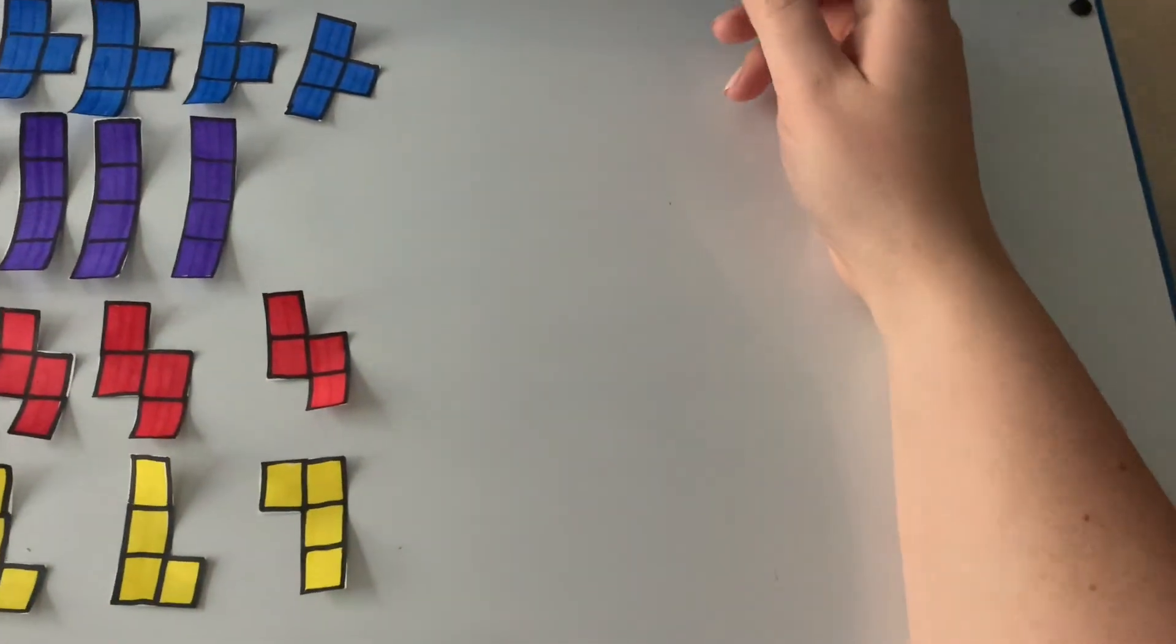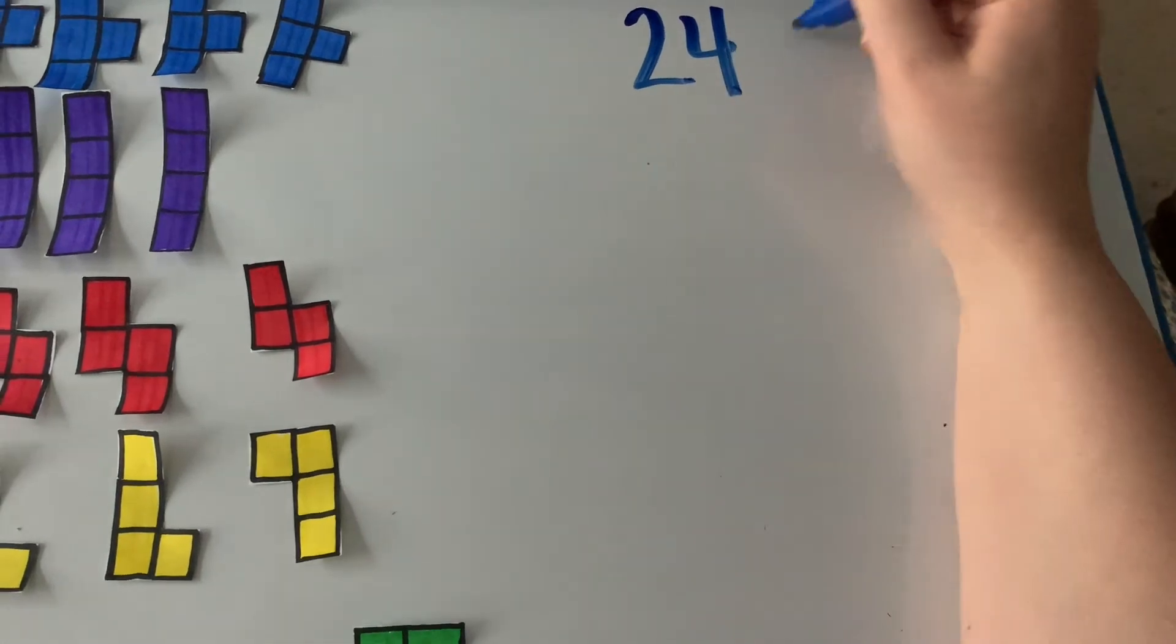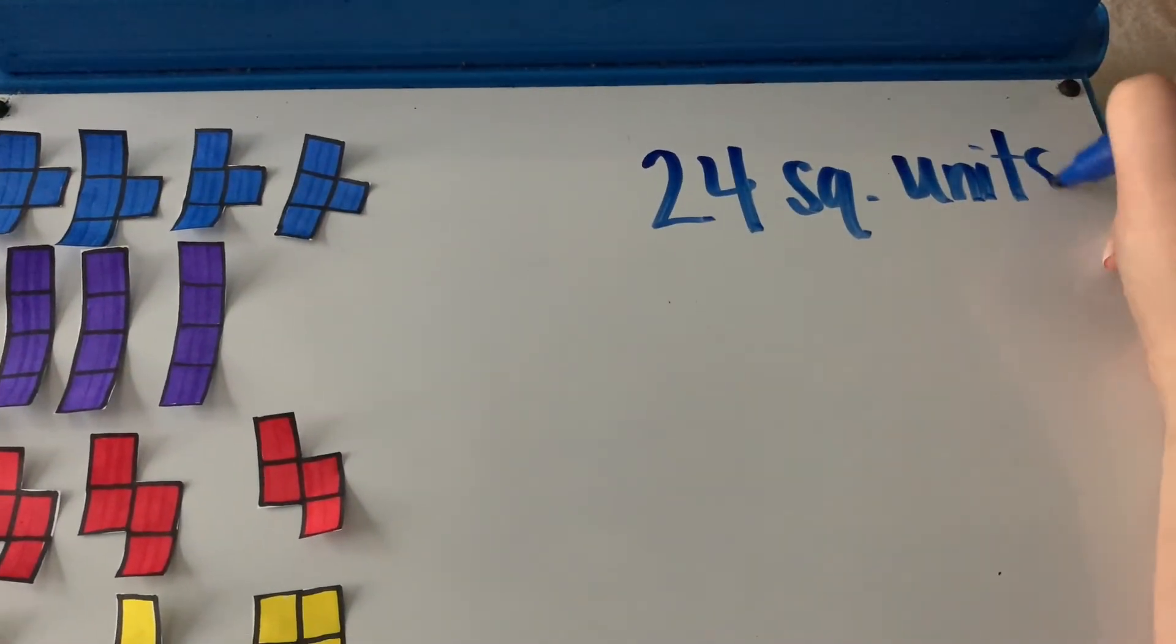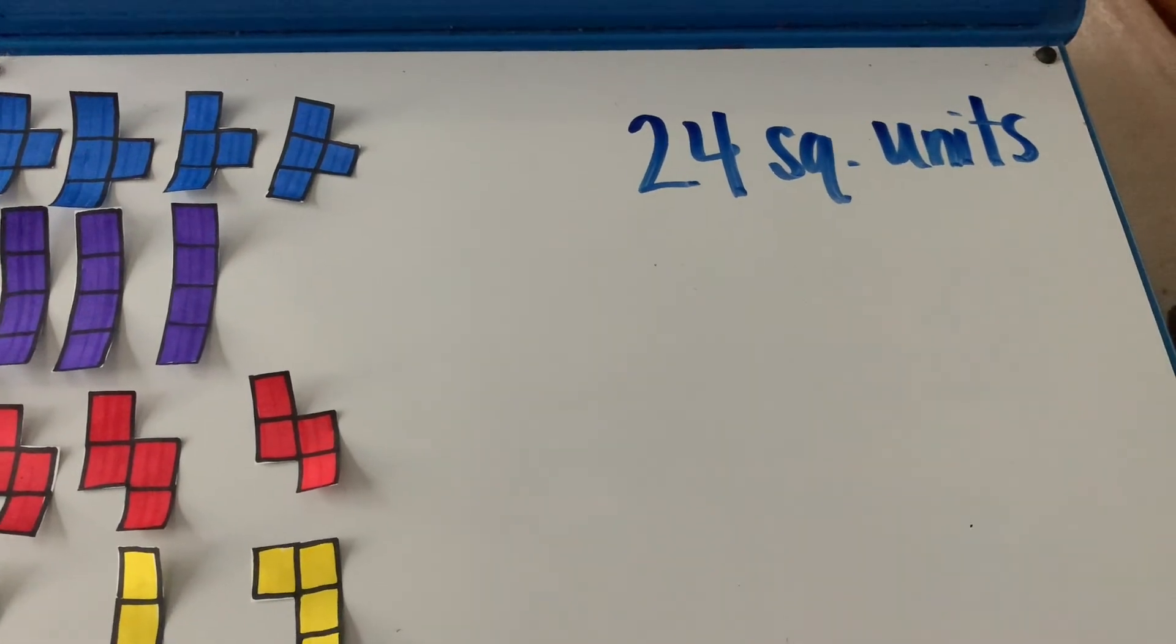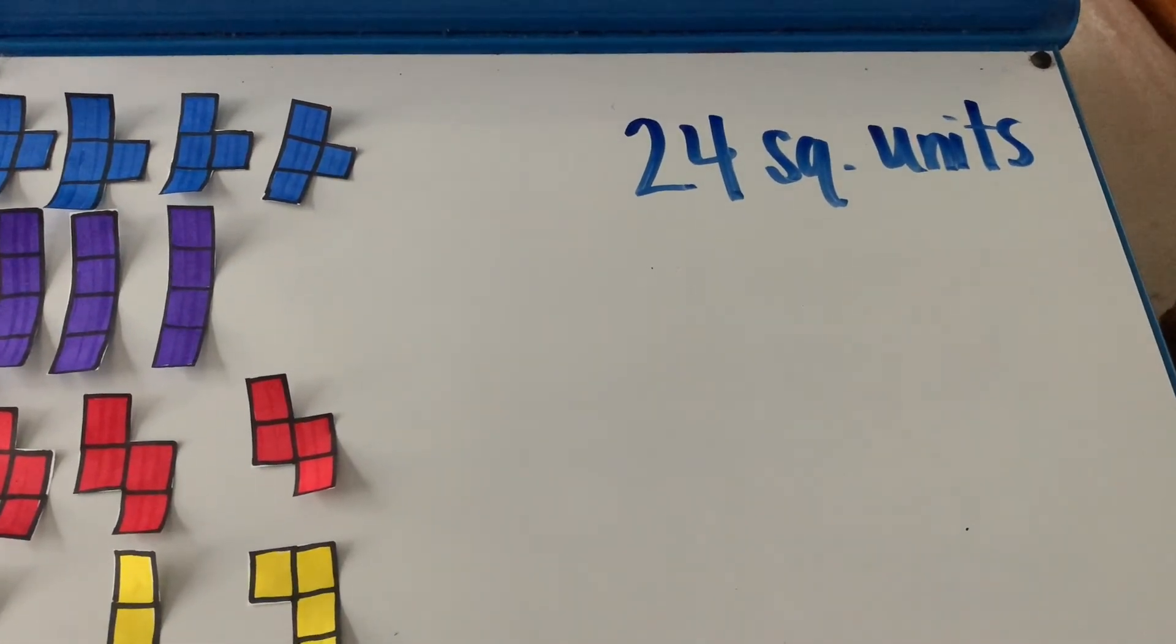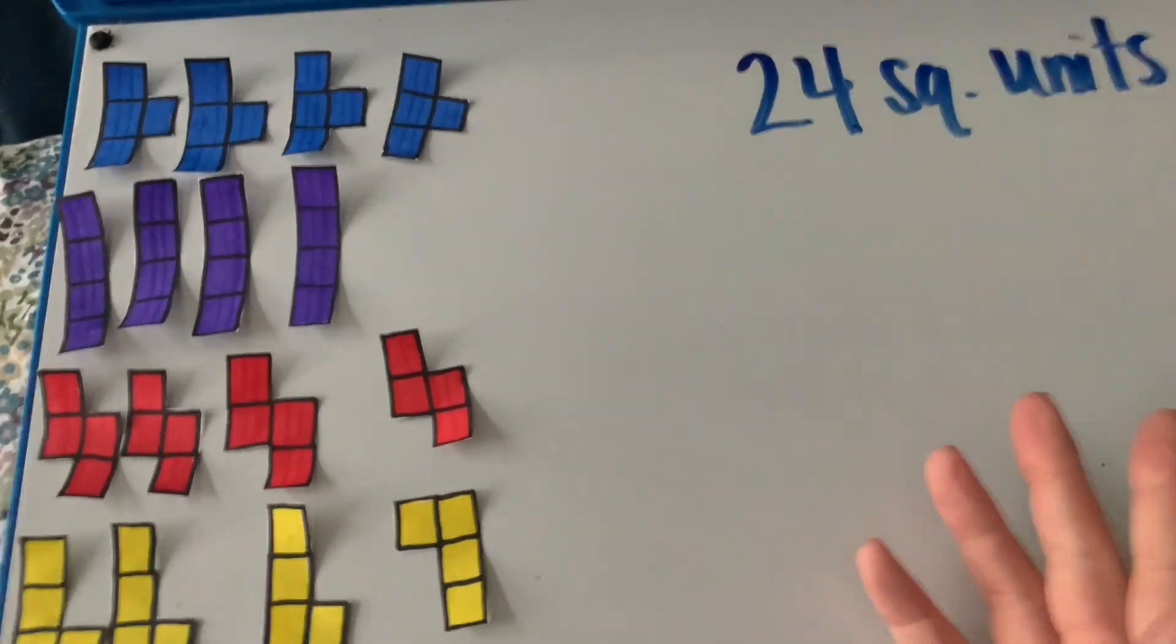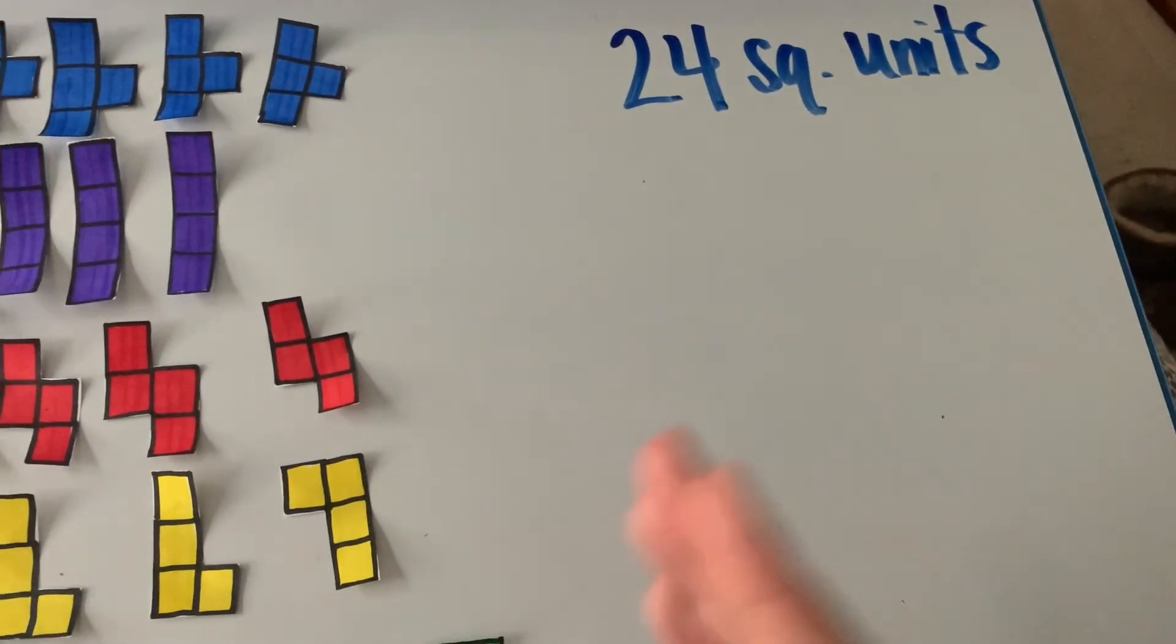All right the next one I want you to try is 24 square units. Okay and what I want you to realize is that you can flip and rotate these tetrominoes. I keep forgetting how to pronounce them.